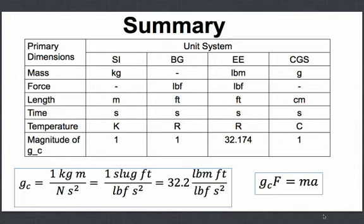There is a fourth system called the centimeter-gram-second (CGS) system. For this system, mass is gram, force is not a primary dimension, length is centimeter, time is second, and temperature is Celsius. The magnitude of GC for this system is equal to 1.